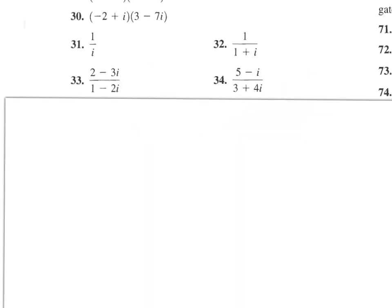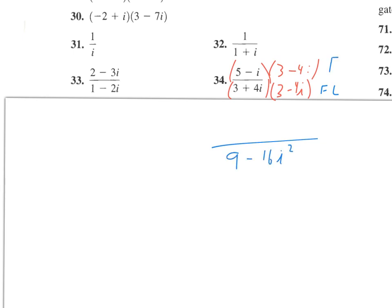Next up, number 34. We have to get rid of the i in the denominator by multiplying by the conjugate, which is 3 minus 4i — multiplying top and bottom. On the bottom we get 9 minus 16i squared.